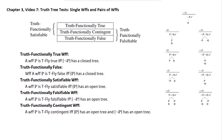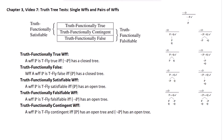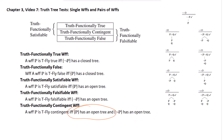Given any formula p, if it's truth functionally contingent — that is, if it can be true on some truth value assignments and false on others — then the set containing p is going to be consistent and have an open tree, and the set containing not-p is going to be consistent and have an open tree as well.